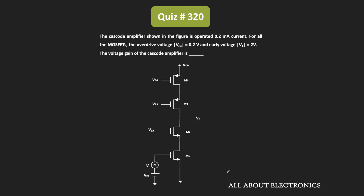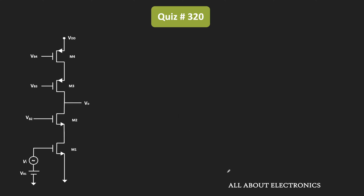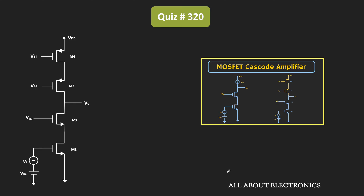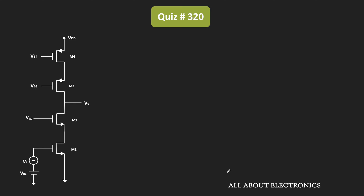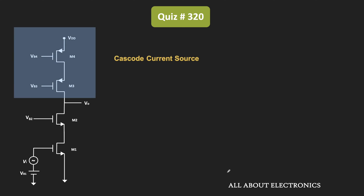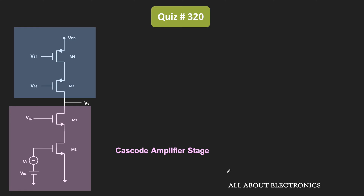Hey friends, welcome to the YouTube channel all about electronics. In this question, we have been given a cascode amplifier and we have been asked to find the voltage gain. This circuit is a cascode amplifier with a cascode current source as a load. The PMOS circuit is a cascode current source while the nMOS circuit is the cascode amplifier.